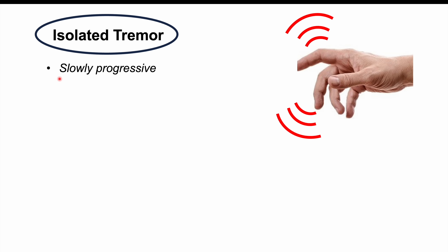Essential tremor is defined as monosymptomatic, meaning there is only a tremor — an isolated tremor. The tremor is considered slowly progressive, starting off very mildly and over time progressively becoming worse. An essential tremor is an action and postural tremor: an action tremor occurs during movement of the hands or arms, while a postural tremor occurs when lifting the arms against gravity. A resting tremor is generally not seen, although it can occur in some cases as overflow.